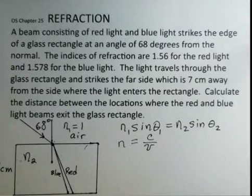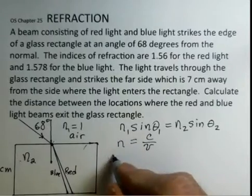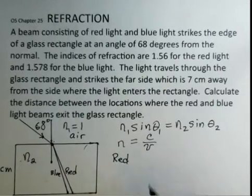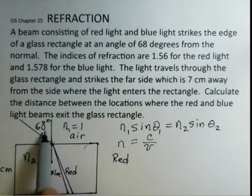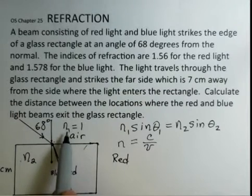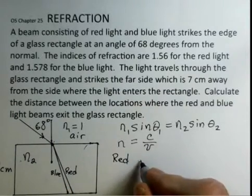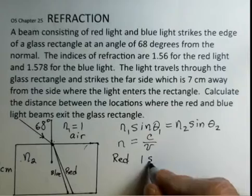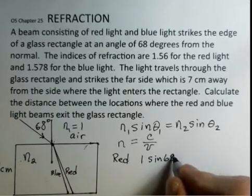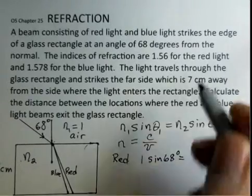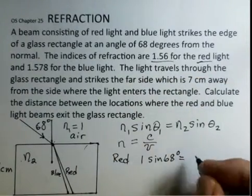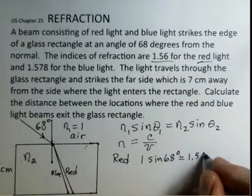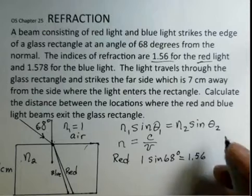Now let's do some calculations for the red beam first. For the case of the red light, I have 68 degrees for theta 1 and N1 is 1. So we can go ahead and do the left side. For the red light, our index of refraction is 1.56 in the glass. So this is medium 2 in the glass.